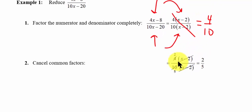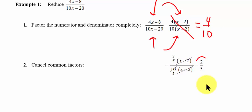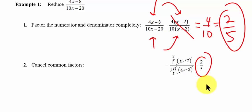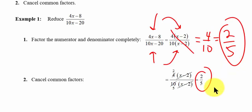So once we've canceled out the x minus 2s, we're left with 4 over 10, which reduces to 2 over 5. So 2 over 5 is your final answer. Again, when we're trying to simplify or reduce a rational expression: factor the numerator, then factor the denominator, and then simplify where you can.